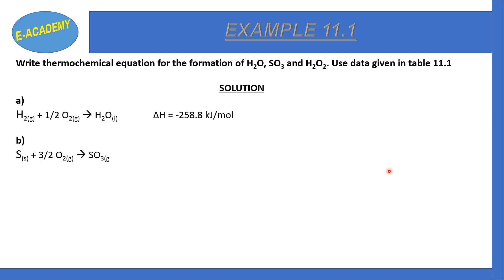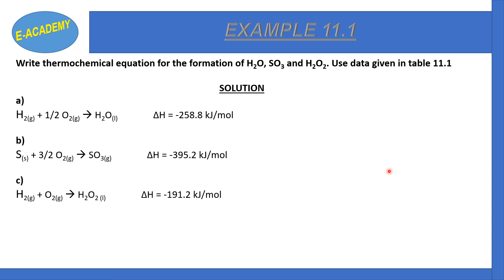Next, formation of sulfur trioxide: S + 3/2 O₂ → SO₃, and delta H = −395.2 kJ per mole. Part C, formation of H₂O₂: H₂ + O₂ → H₂O₂, and delta H = −191.2 kJ per mole.